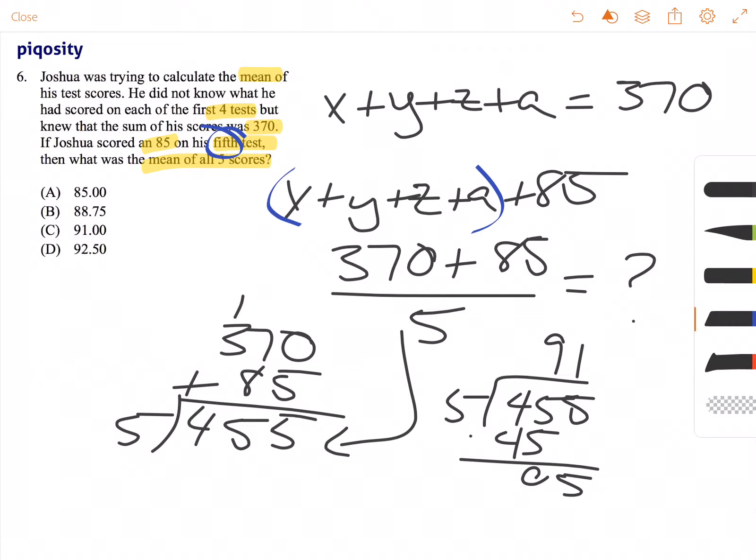So this one was fairly quick to solve. So our average or mean is 91, our answer choice C.